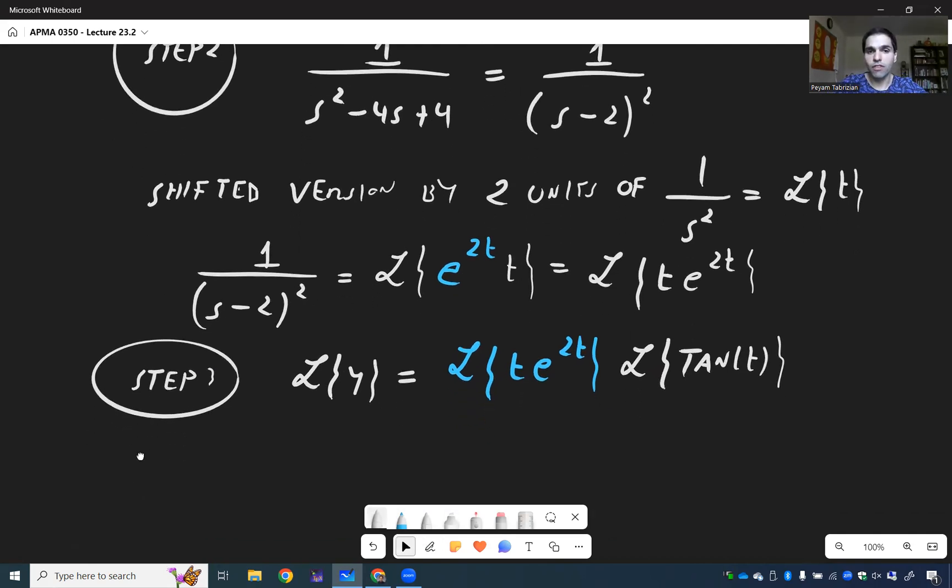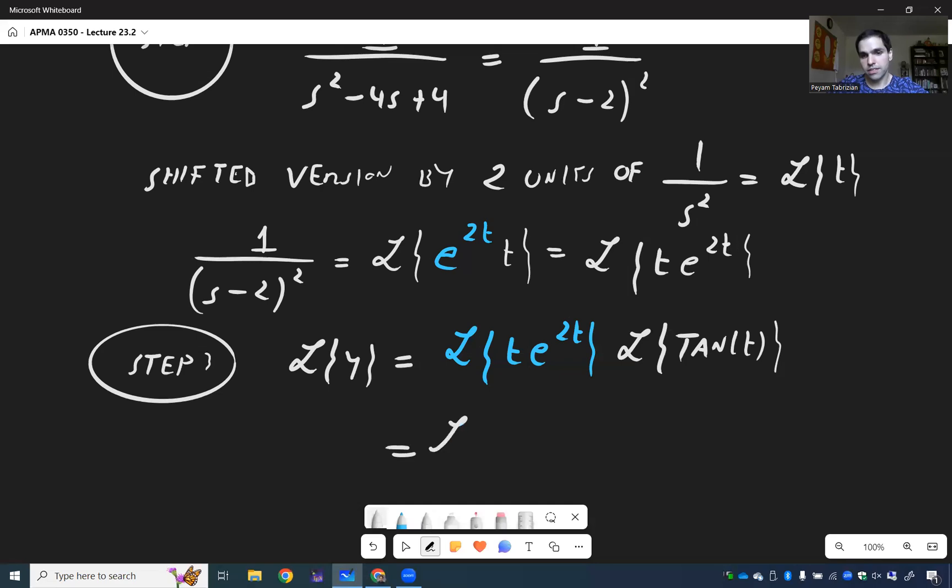And then use a convolution theorem. So that's the same thing as L of t e to the 2t star tangent of t of t.